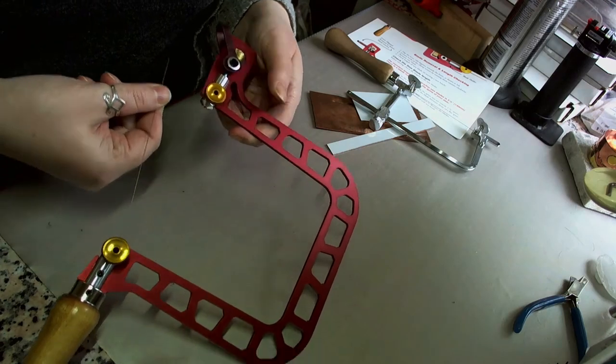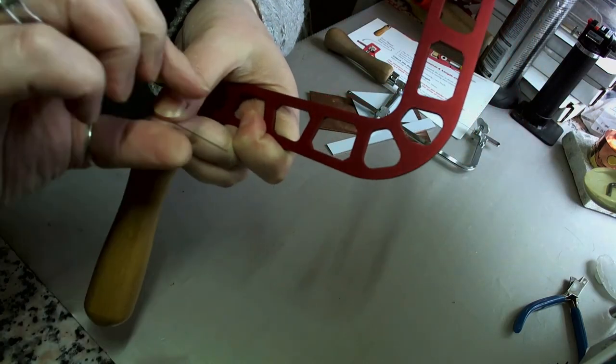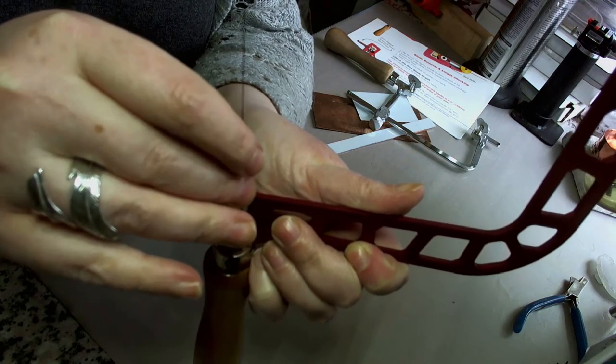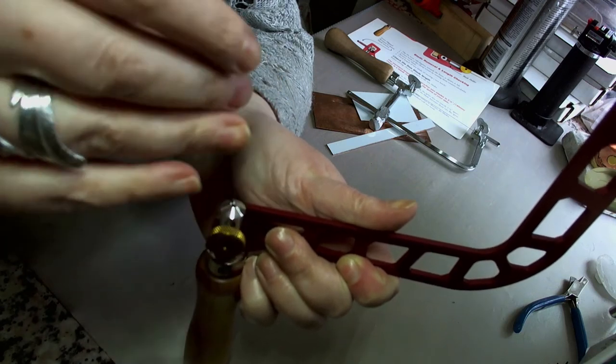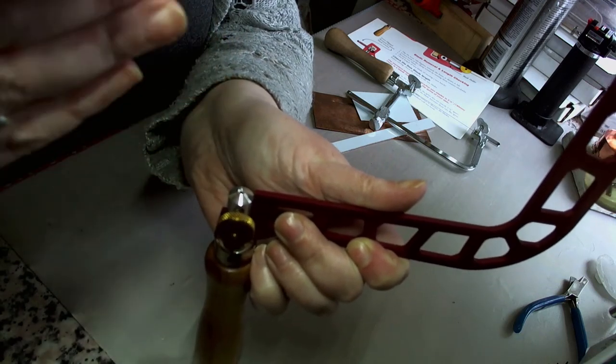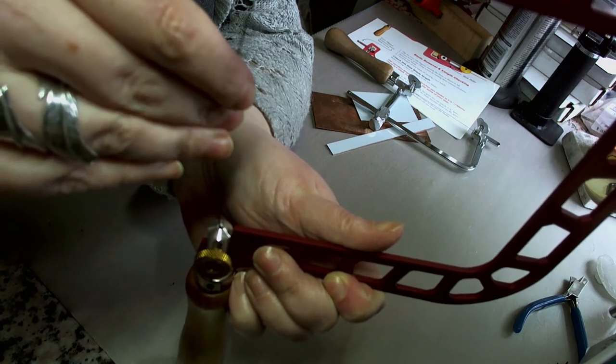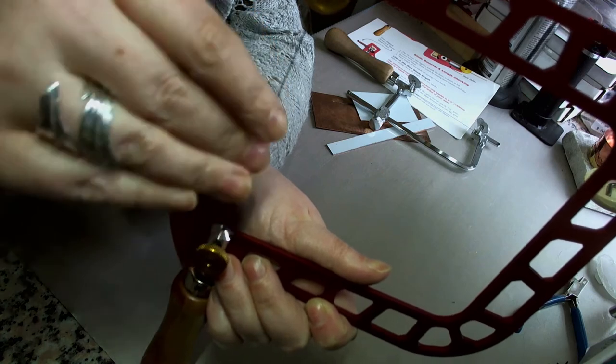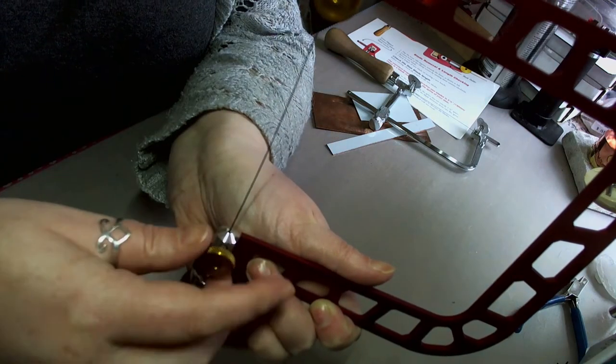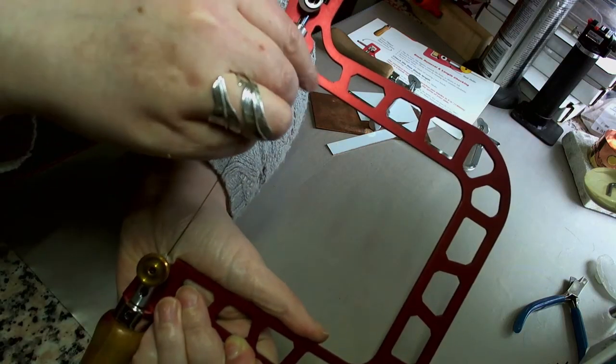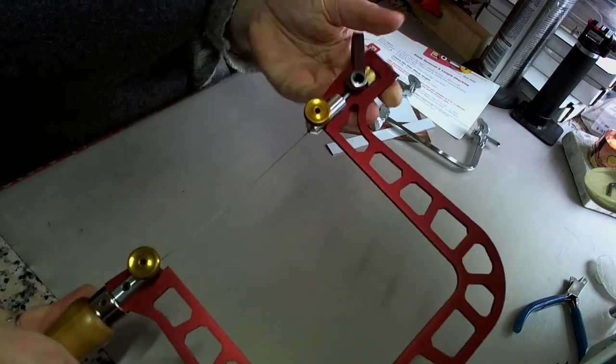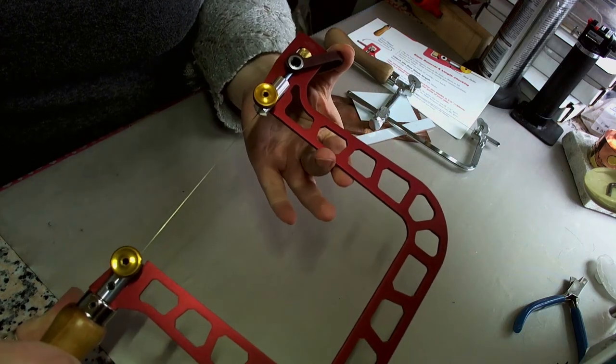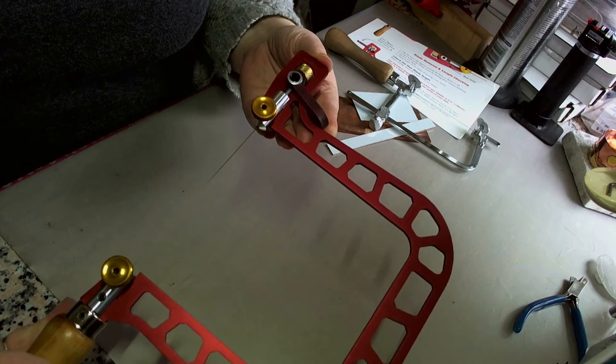To refit the blade, really simple. You just want to place your teeth side out, make sure it's the right way around. Place it between the two, tighten up your bottom one, tighten up your top one. Because your tension isn't set, you can just tension it straight up until you feel the bite straight away. Really simple to use.